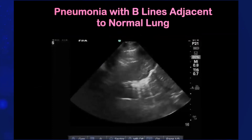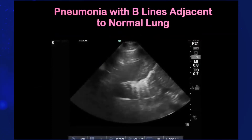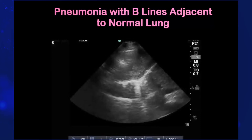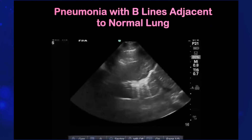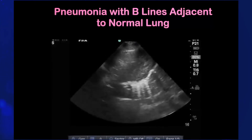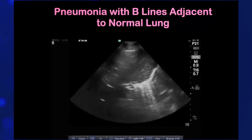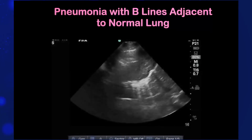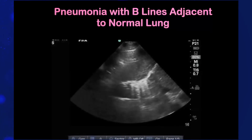And pneumonia with the beeline adjacent to normal lungs. So you can have pneumonia on some part of the lung, but the other part that is not affected might not look like pneumonia. So make sure that you scan all fields in the lungs.